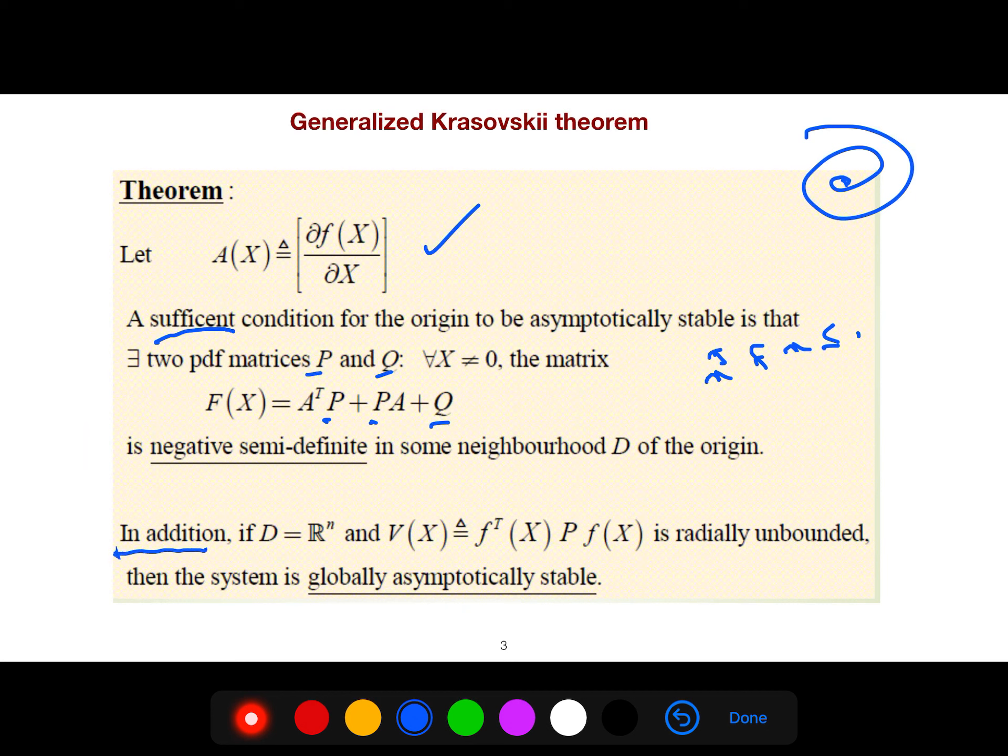And in addition, if these are in R^n, and your Lyapunov function is formed like this, f transpose Pf of x, is radially unbounded, then the system is globally stable. And this is rare. It is useless, because if everything is globally stable, it has limited opportunity to create something meaningful and interesting, especially in biological systems. We don't have such thing.